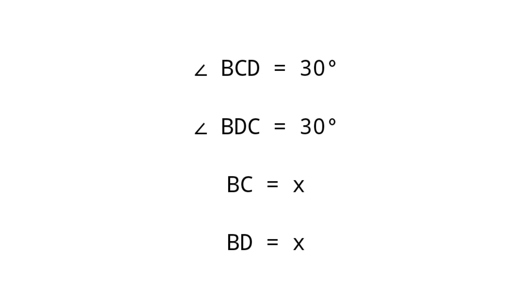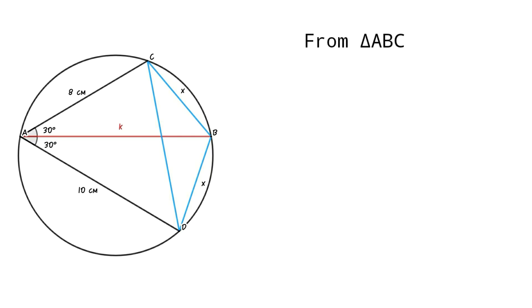So we can assume BC equals CD equals X. From triangle ABC, X squared equals 8 squared plus K squared minus 2 times 8K cos 30. That is, X squared equals 64 plus K squared minus 8K root 3.